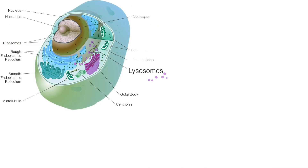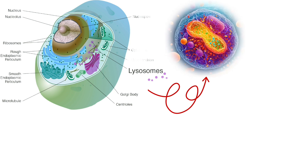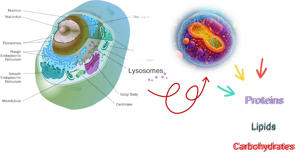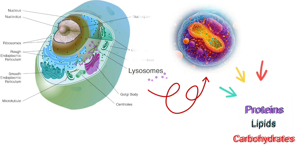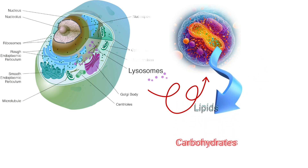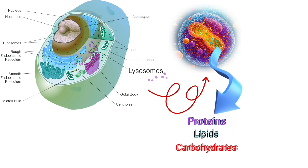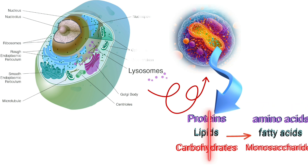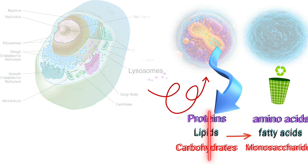Lysosomes are cellular organelles responsible for breaking down various substances like proteins, lipids, and carbohydrates. These lysosomes are sacks of enzymes. The enzymes in the lysosomes are involved in breaking down large molecules into smaller ones, which can then be reused by the cells.